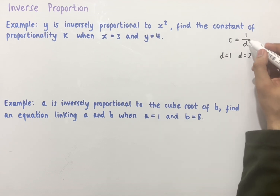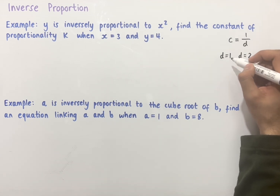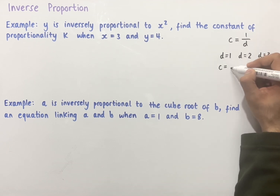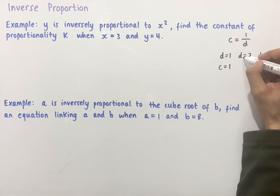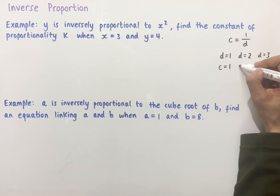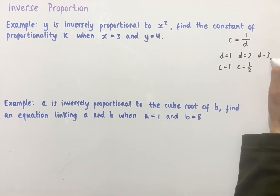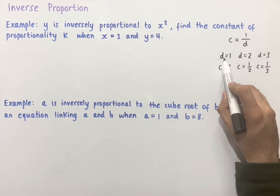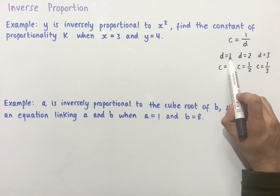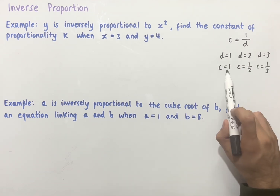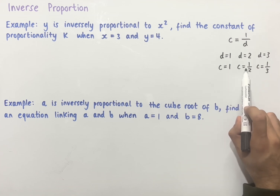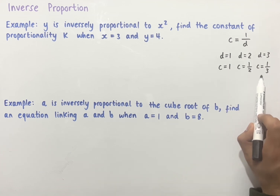If we substitute these into the equation, we find that when d equals 1, c equals 1 divided by 1, which is 1. When d equals 2, c equals 1 over 2. And when d equals 3, c equals 1 over 3. So we can see that as d is increasing from 1, 2, and then 3, c is decreasing — going from 1, then to a half, and then to a third, and so on.